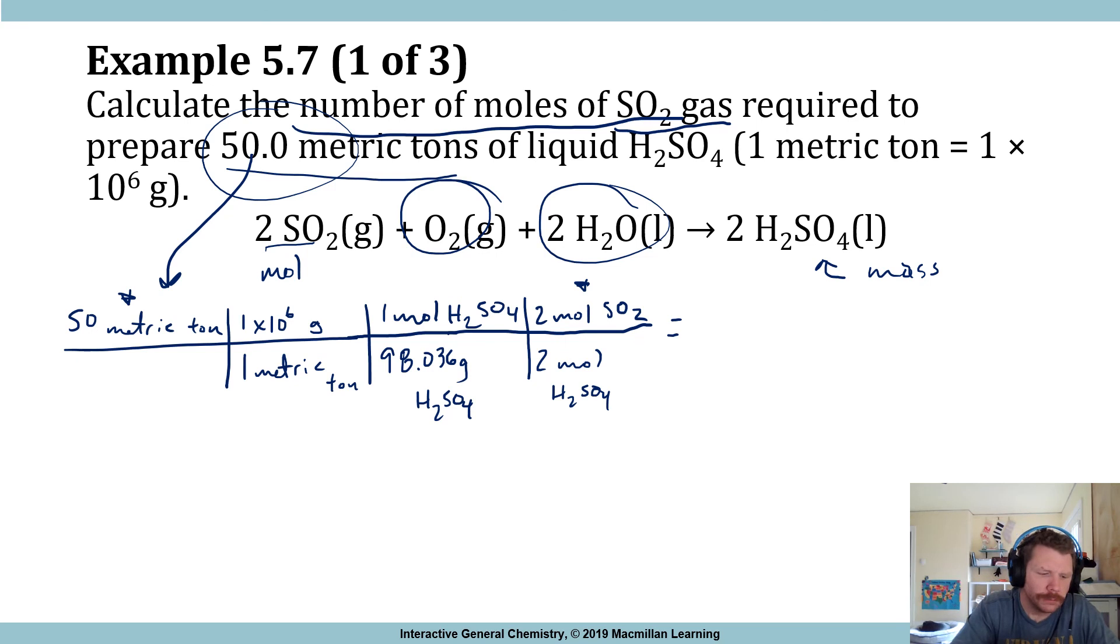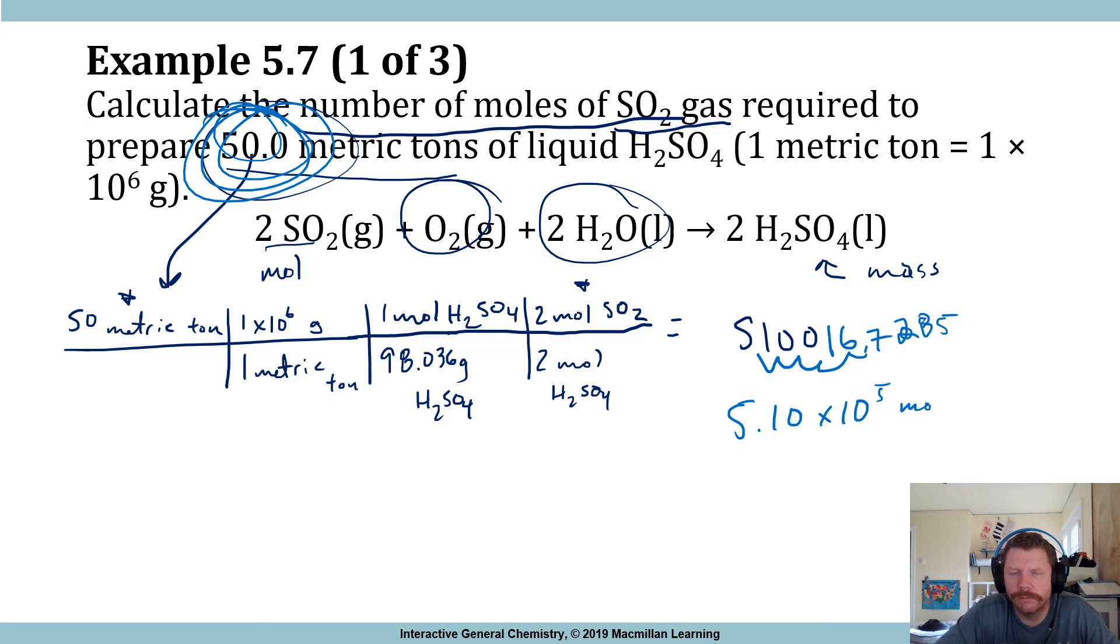Okay, so now what I'll do is 50 times 1 times 10 to the 6th times 2 divided by 98 point... rats. Okay, so 50 times 1 times 10 to the 6th times 2 divided by parentheses 98.036 times 2 equals 5, 1, 0, 0. Oh, I went too far with my 0's there. Delete that. Erase that. I'm going to do the same color. I think this is the same color. 5, 1, 0, 0, 6.7, 8, 7, 2, 8, 5 is what I got there. And I know that I have three sig figs with which to work. So, I'm going to rewrite this as 5.10 times 10 to the 1, 2, 3, 4, 5 times 10 to the 5th moles of SO2.